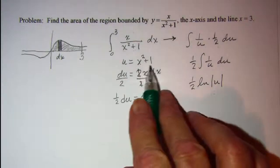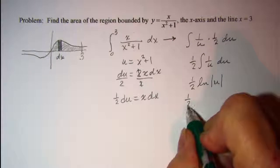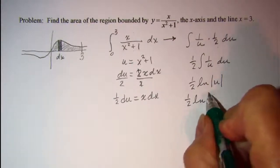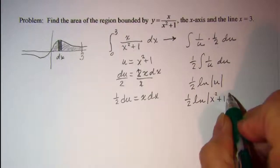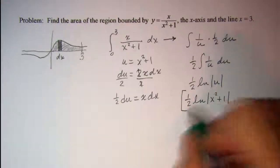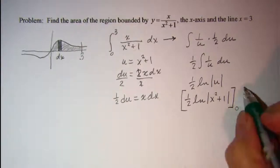Let's sub back in. x squared plus 1 goes in for u, and we're evaluating that from 0 to 3.